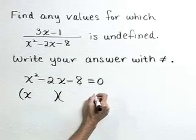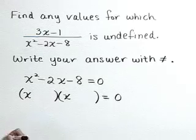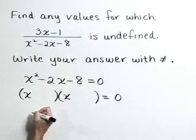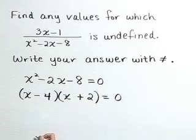Let's next factor it. x times x gives x squared. Factors of negative 8 that sum to negative 2 are a negative 4 and a positive 2.